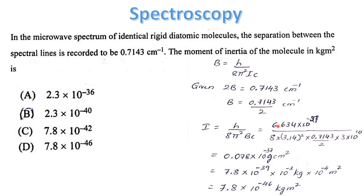Using h = 6.634×10⁻²⁷ erg·s (CGS), B = 0.7143/2 cm⁻¹, and c = 3×10¹⁰ cm/s, the calculation gives I = 0.078×10⁻³⁷ g·cm². Converting to SI units (×10⁻³ kg × 10⁻⁴ m²), the answer is 7.8×10⁻⁴⁶ kg·m². Option D is the answer.